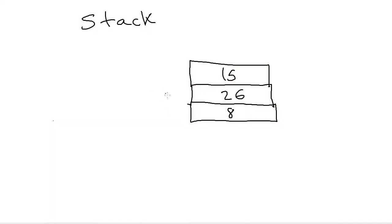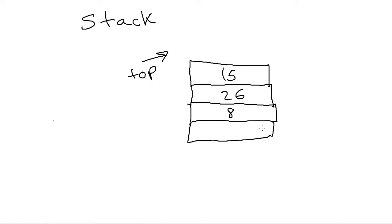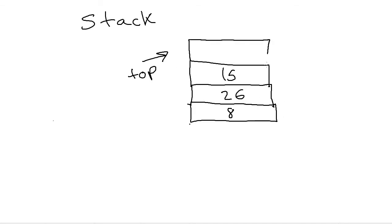A stack is a data structure where what makes it a stack is the pattern in which you access it. With a stack, you always access it on one end called the top. So if we have a stack of numbers — 8, 26, 15 — the top is 15. Whether we're adding or removing from the stack, we always do it on the top. A new number like 30 cannot go at the bottom or be inserted in the middle. The only place we can add new data is on the top, so 30 becomes the new top.